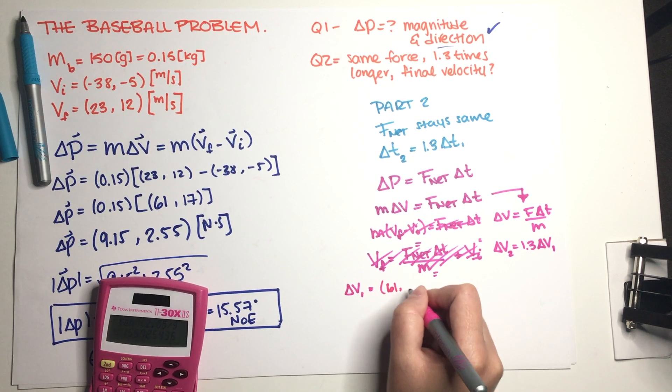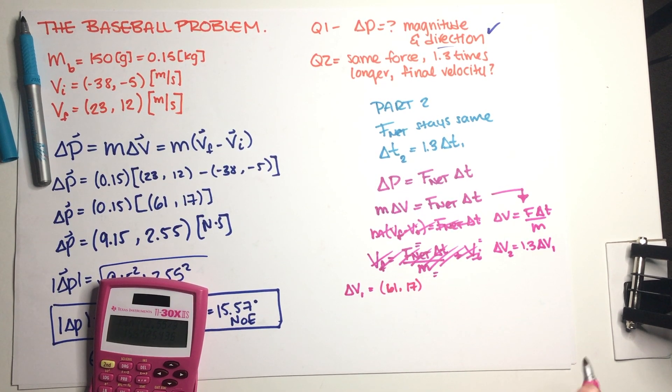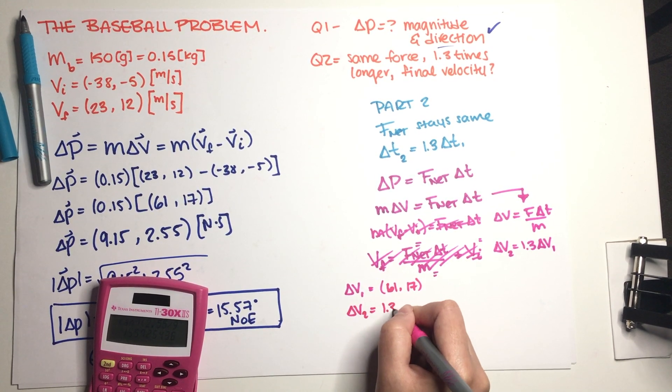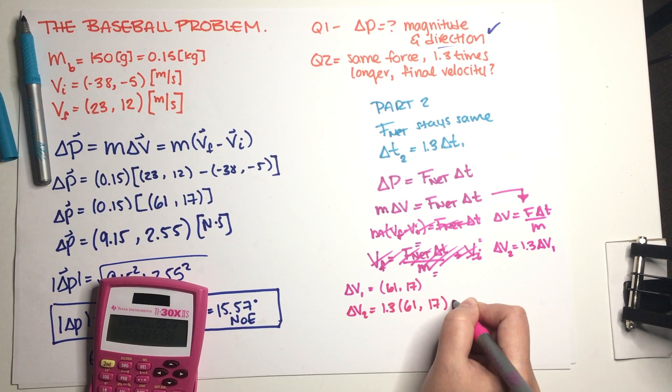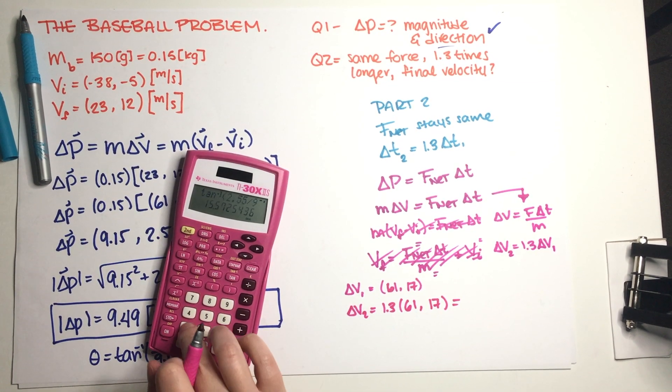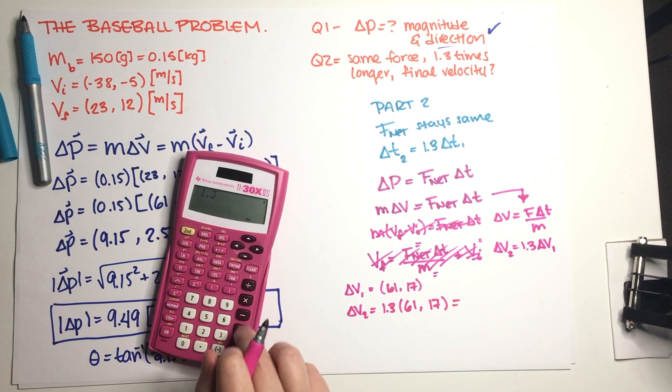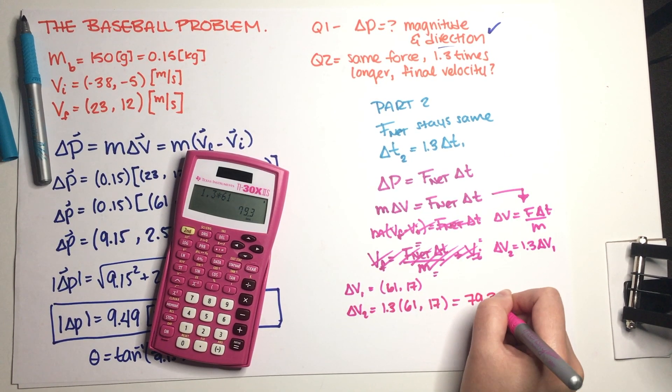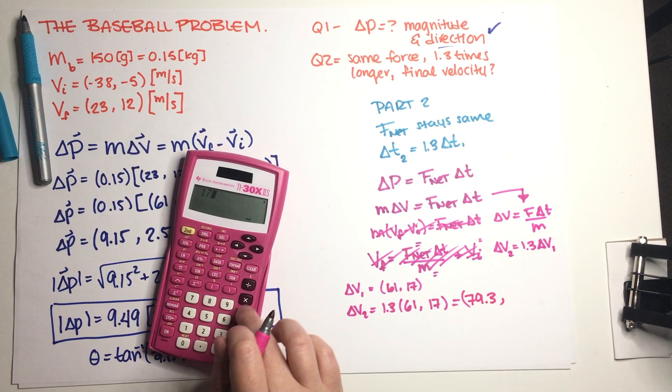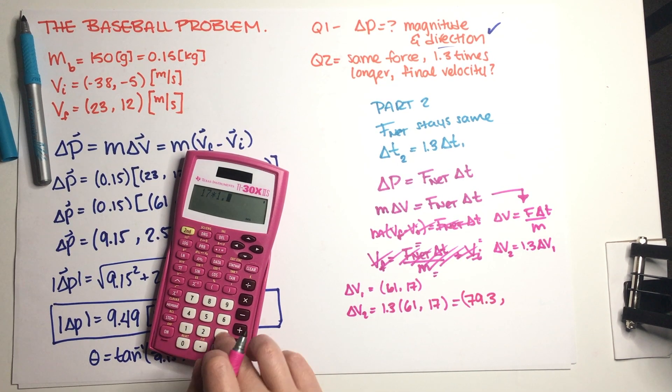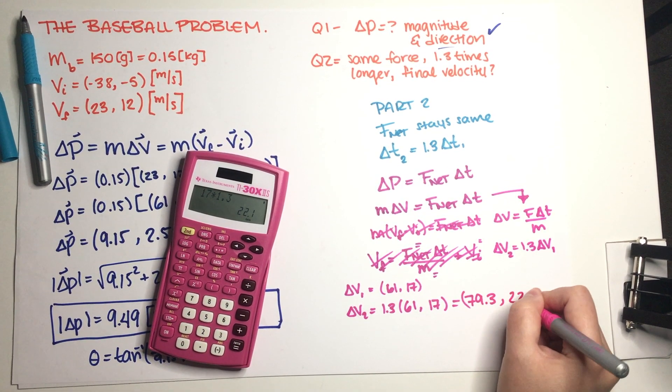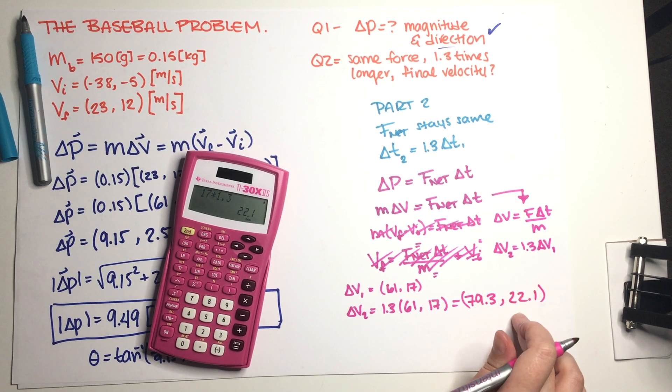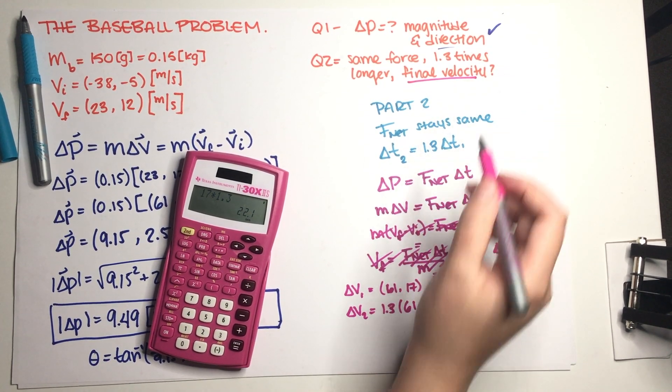So 61 and 17 like this. So now delta v2 is just 1.3 times those two numbers. So this is just going to be 1.3 times 61 is 79.3, and then 17 times 1.3 is equal to 22.1. So our new delta v is basically this.